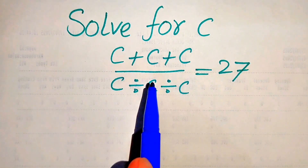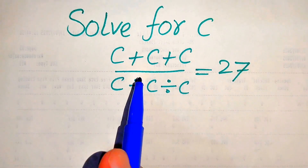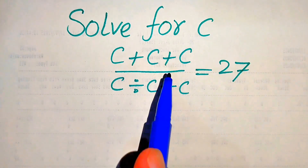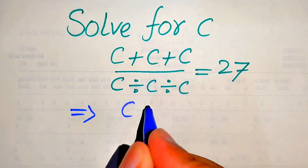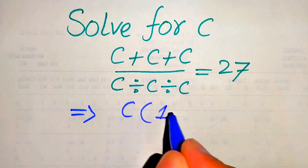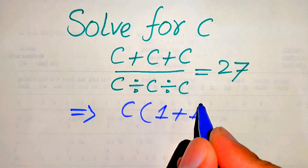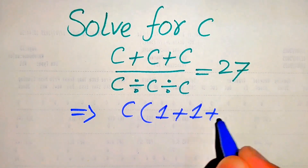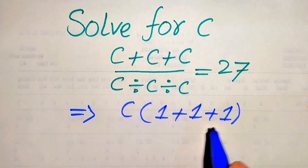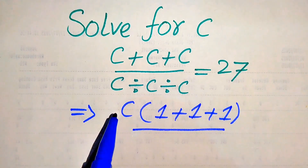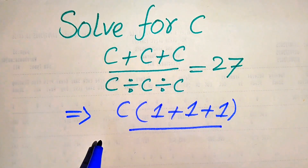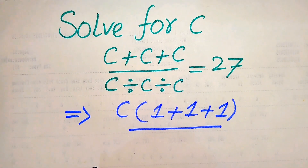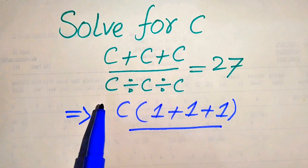Here first we need to focus on the numerator term, and in the numerator term we have C as the common term. So here we will take out common C and we get the remaining values are 1 plus 1 plus 1, and it is divided by — here you see that C is divided 3 times, and we know the order of solving division is from left to right.